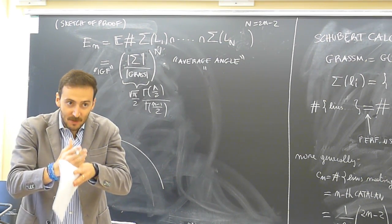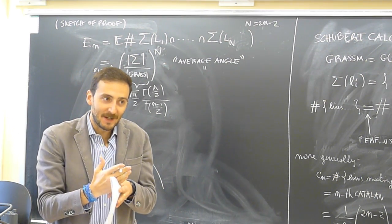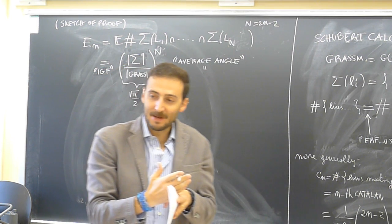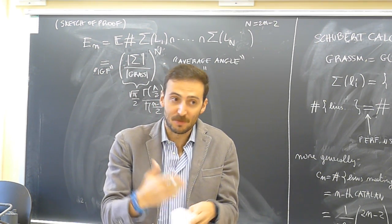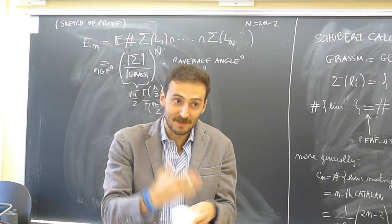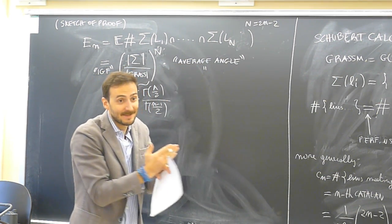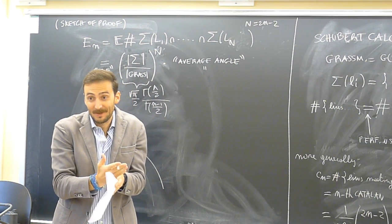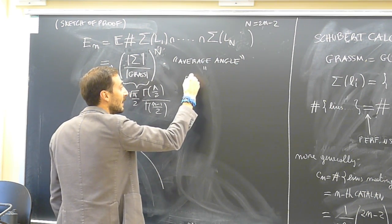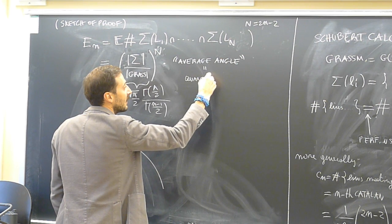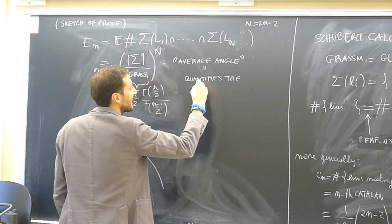Schubert varieties are transversal when they intersect. This makes clear why over the complex numbers it's simple to compute, because transversality over the complex numbers for complex cycles is very stable. But over the real numbers it's not this stable — that's why it's difficult. This quantity quantifies the amount of transversality.